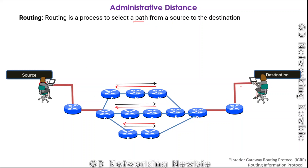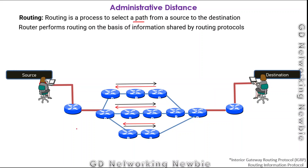We have multiple paths to destination, but which path will be the best path — meaning which path can send our data as soon as possible from source to destination? Routing will be selecting the best path, and routers perform this routing decision on the basis of some routing protocols. These routers may be configured with many routing protocols like RIP, OSPF, and others.